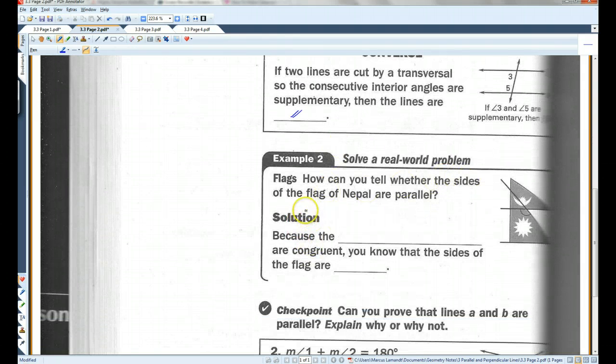How can you tell whether the sides of the flag of Nepal are parallel? Okay. So, I apologize that the diagram didn't come out so great. Hopefully, on your page, you can see that this angle is congruent to this angle here. And these are alternate interior angles. Now, because the alternate interior angles are congruent, you know that the sides of the flag are parallel.